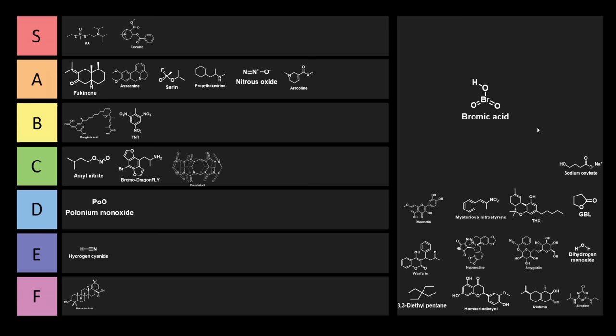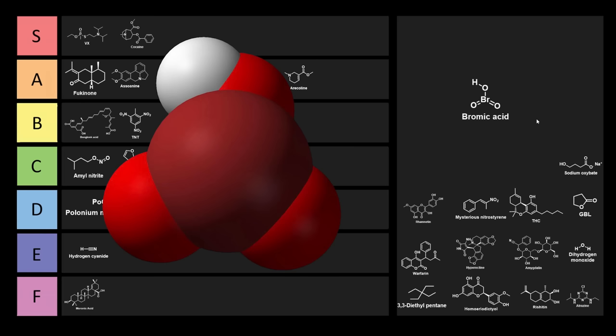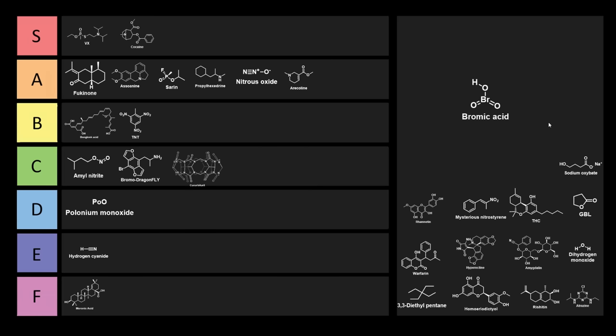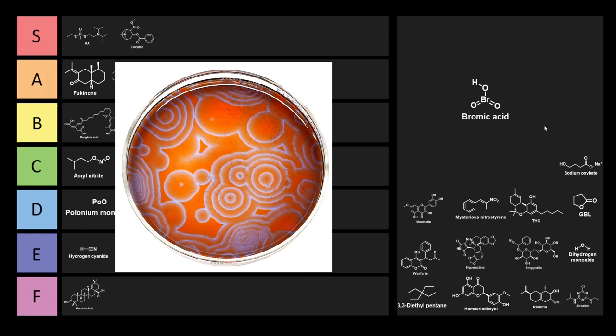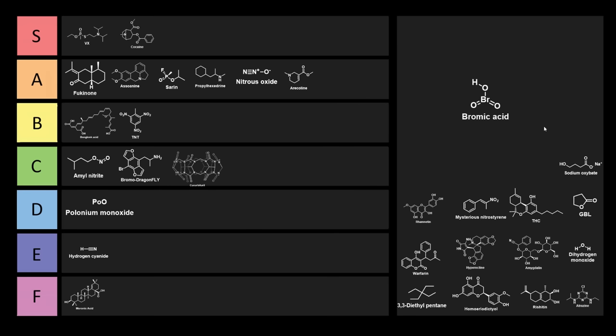Now, bromic acid. Bromic acid is a chemical that looks pretty sus. It's used in the Belousov-Zhabotinsky reaction, which is actually the reaction that NileRed uses for the logo for his channel. And I'll include a link to his video about the Belousov-Zhabotinsky reaction in the description. This molecule is a little bit sus. I don't think anyone's going to have any issues with it, though, so we'll put it right into F tier.